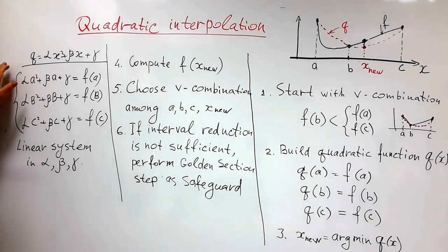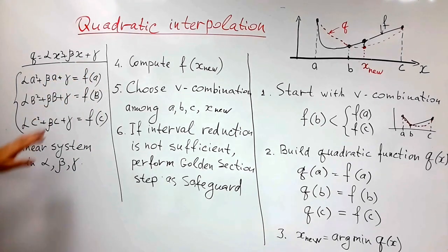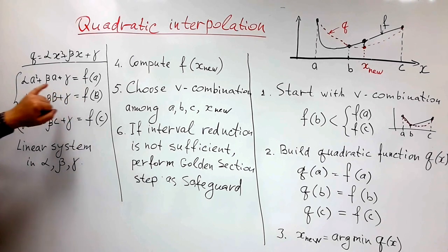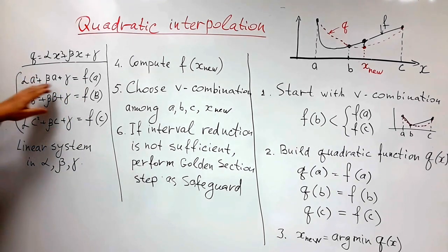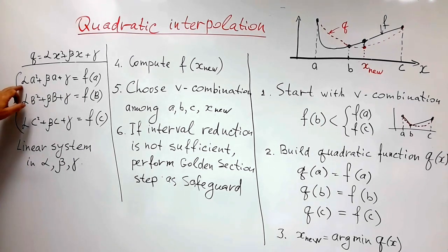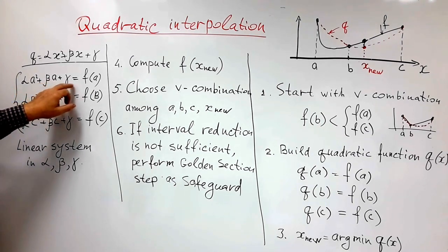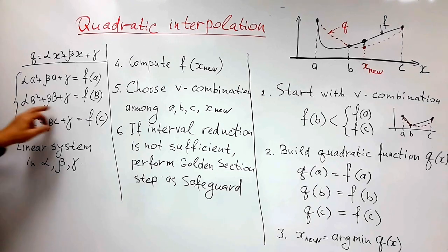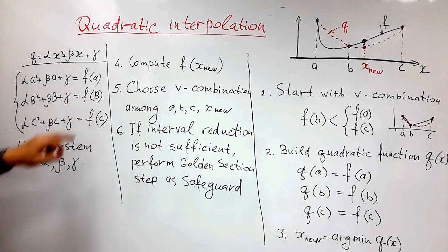Just to say one point, how to build a quadratic polynomial: we have a quadratic function alpha x square plus beta x plus gamma, and we need in three points A, B, and C to be equal to our original function. So alpha A square plus beta A plus gamma is f of A, alpha B square plus beta B plus gamma is f of B, and so on.